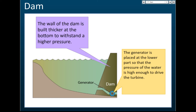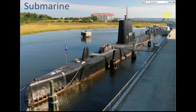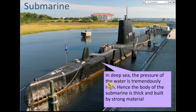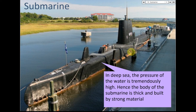For submarines operating in the deep sea, the water pressure is tremendously high. So the body of a submarine is very thick and is built from strong materials. However, there is a limit — a submarine may only be able to descend to 50 or 100 metres. If it sinks deeper than its limit, it will crack. Therefore, submarines must use strong materials and have very thick walls.